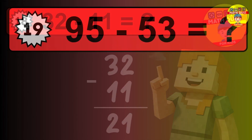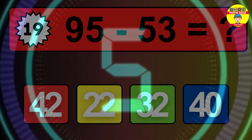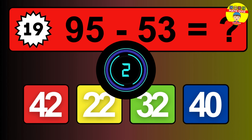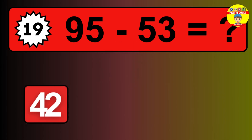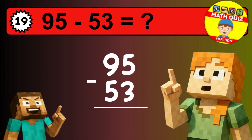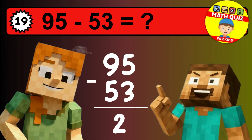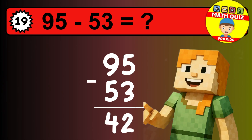What is 95 minus 53? Time to think. Let's solve this step by step. We start with the units: 5 minus 3 is 2. Then we go to the tens: 9 minus 5 is 4. The final answer is 42.